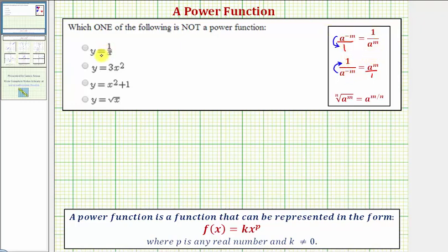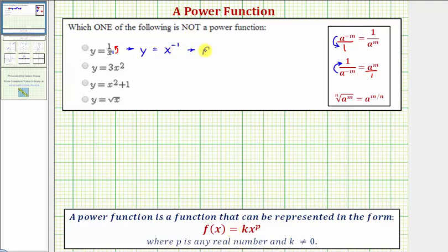So going back to our first function, we have y equals one over x, which is the same as one over x raised to the power of positive one. So if we move this up to the numerator, we can rewrite this function as y equals x raised to the power of negative one. So notice in this form p is equal to negative one, the exponent, and k, the coefficient, would be equal to positive one, and therefore this is a power function.